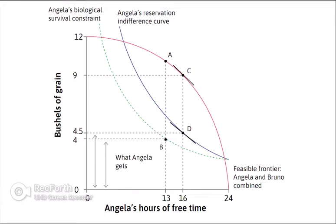Now we've looked at the feasible frontier and basic indifference curves, we're going to move on to something more complex: reservation indifference curves and how they relate to biological survival constraints. The scenario involves a landlord trying to maximize his profits from a laborer renting his land. He is essentially the proposer in an ultimatum game, making a take-it-or-leave-it offer to the laborer, Angela.